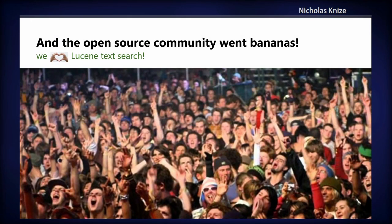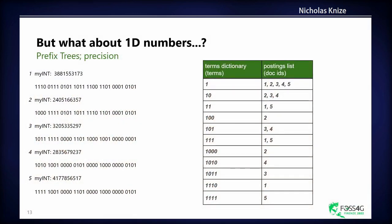The open source community went bananas on this. We have unstructured text, it's super simple, the data structures work well. And then a few years later, what about numbers? Because we just handle unstructured text, but if we want to do scientific analysis or any kind of numeric search, it's not supported. So that was the next step in the evolution, to be able to add numerics.